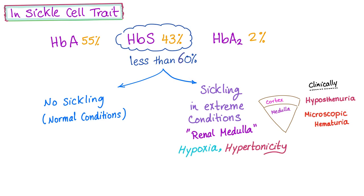Remember the question: to sickle or not to sickle? What causes sickling? You have to have a hemoglobin S concentration of more than 60%. In sickle cell trait, it's only about 43%, which is definitely less than 60%. So for the most part, there is no sickling. However, sickling occurs only under extreme conditions — such as hypoxia and hypertonicity — which occur in the renal medulla. The renal medulla is notorious for hypoxia and hypertonicity.